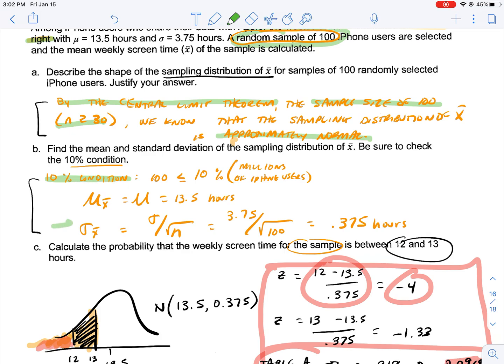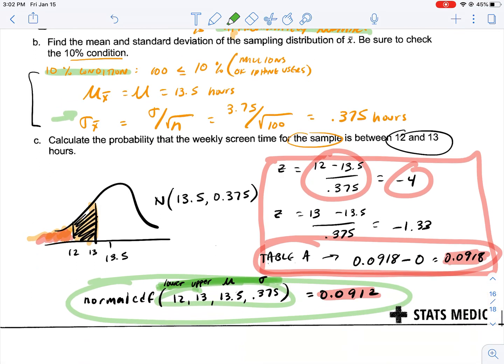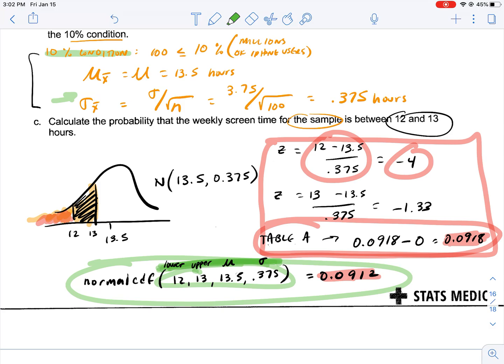We checked our 10% condition to ensure that we could use our standard deviation formula, and then we were able to calculate a probability of the area under a curve, as we've been doing throughout this course. That's the basics of the central limit theorem, and using it to find normal distribution calculations in a sample means situation.